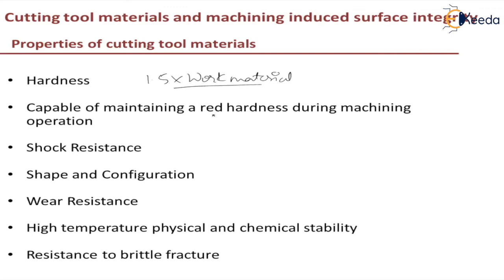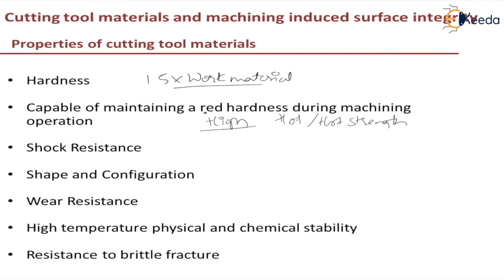Next, the cutting tool should be capable of maintaining red hardness during the machining operation — that is, the ability of the cutting tool to maintain a sharp cutting edge even at higher temperatures. So at higher temperatures it should retain its hardness. This is also called hot hardness or hot strength.